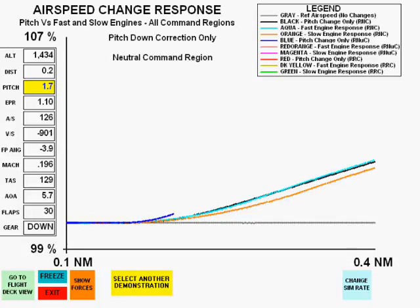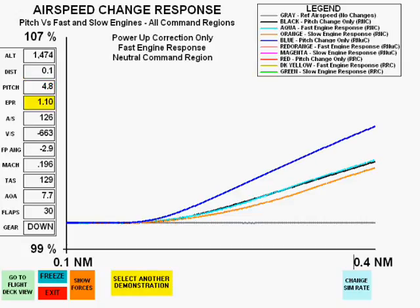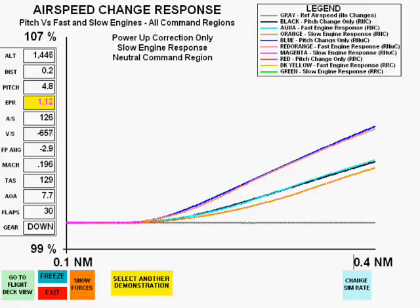Now going to the neutral command region, we see a pitch-down correction first, followed by a power-up in the fast-responding engine, and power-up for a slow-responding engine in the neutral command region.